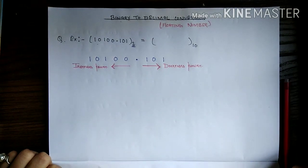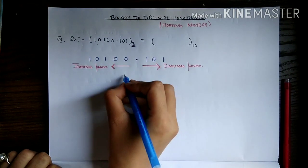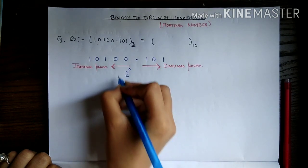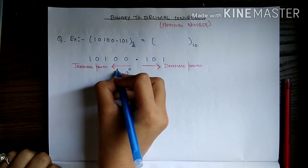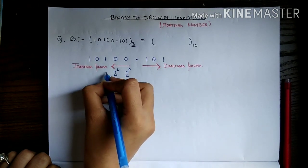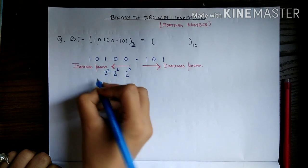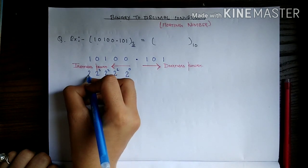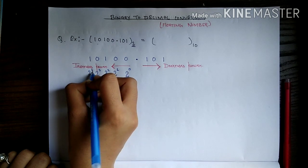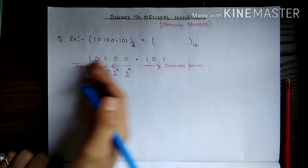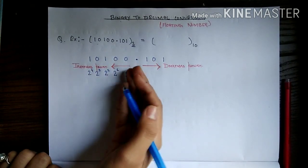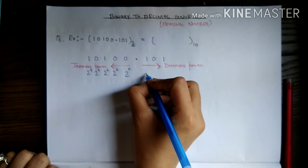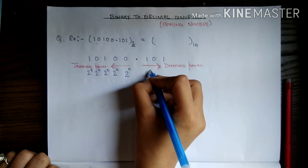Since its base is 2, we write on the left side of the point: 2 to the power 0, 2 to the power 1, 2 to the power 2, 2 to the power 3, and 2 to the power 4. On the right side of the point we decrease the power, so we write 2 to the power minus 1, 2 to the power minus 2, and 2 to the power minus 3.